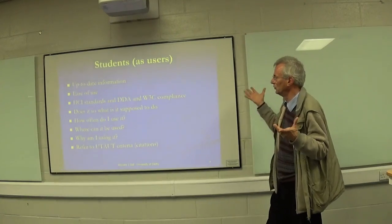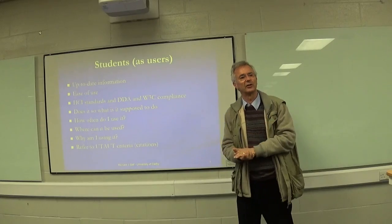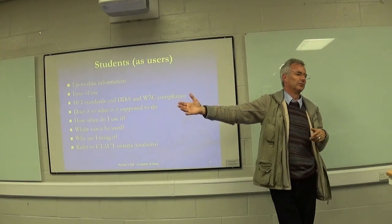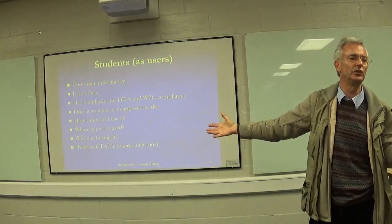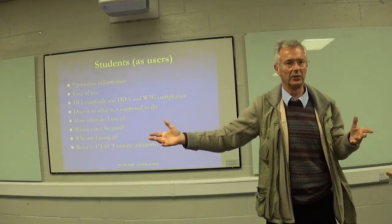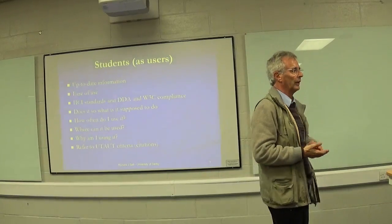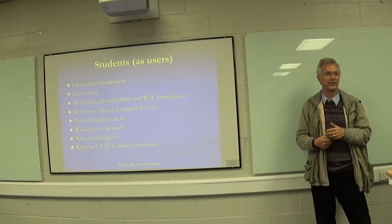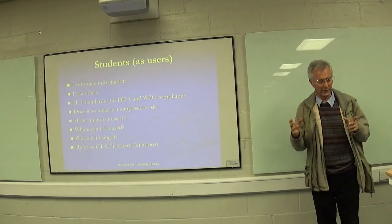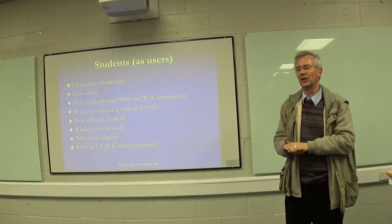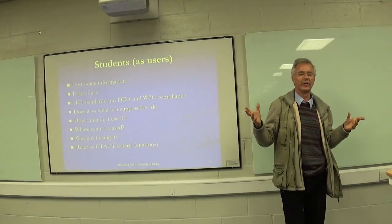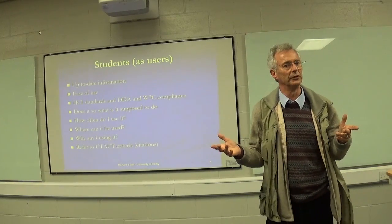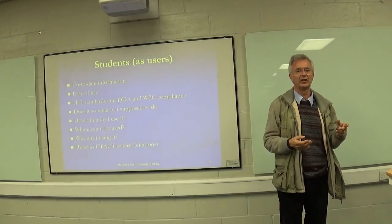The user — whether it's a student or any of those stakeholders using the app — cares whether the information is up to date and how easy it is to use. We talked about TAM and UTAUT a few weeks ago — think about those metrics as well. Human-Computer Interface Standards, disability ideas — how easy are they for people who are blind or have other disabilities to use their services? It's a legal requirement. Have you come across the W3C criteria? I am certain that Dennis has talked to you about them this semester in IT Project Design.